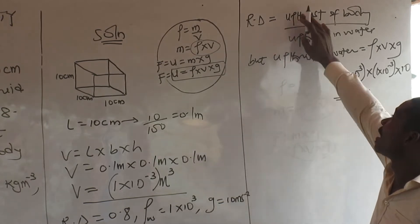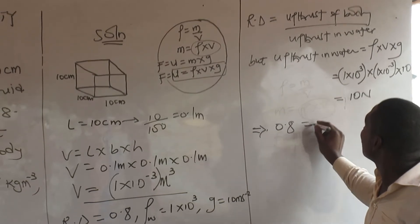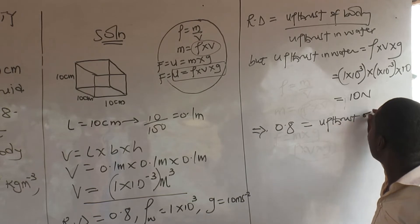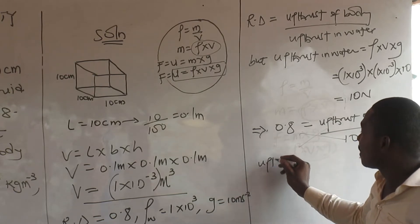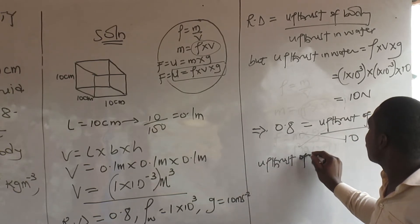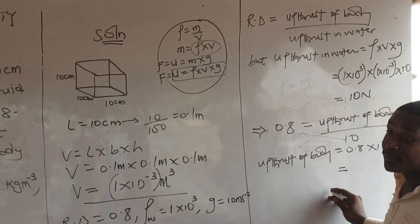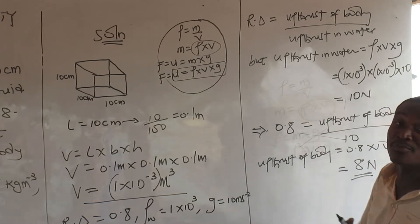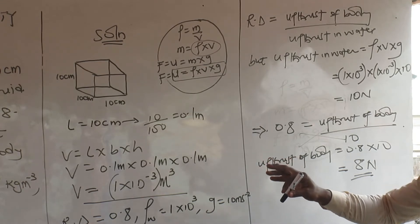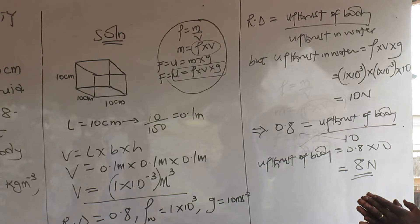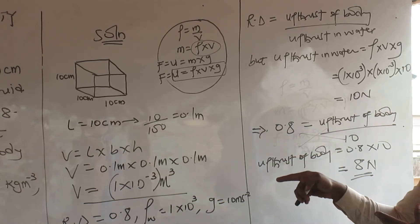Now I have my upthrust in water. We are finding the upthrust of the body, where relative density equals 0.8. So: 0.8 equals upthrust of body over 10. Cross-multiplying, upthrust of body equals 0.8 times 10, which is 8 newtons. That is the upthrust of the body. Also note: if they give you a side of a figure, that is not a volume — you must multiply length by breadth by height to get the volume.